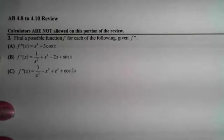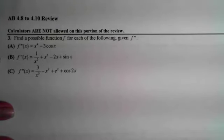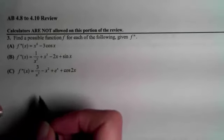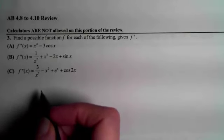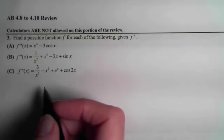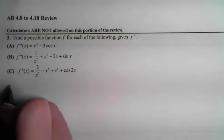This is the 4.8 to 4.10 review. Calculators are not allowed, and this is number three. On each of these problems, we are trying to find f when we are given the second derivative of f. That means we're going to have to take an antiderivative two times, and where most people mess up is they neglect that constant of integration each time they go back.